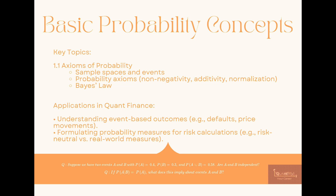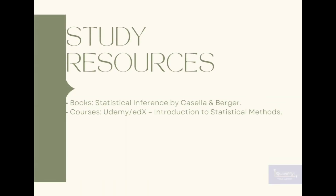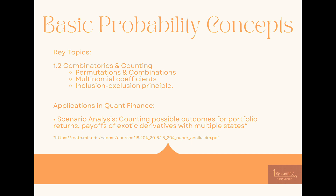Under the axioms of probability you have sample spaces, events, probability axioms like additivity and normalization, and Bayes' law. Some of these concepts are used in probability measures for risk calculations, like the risk-neutral versus real-world measures — the P versus Q measures. I have also included study resources after each subtopic.